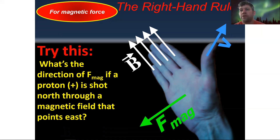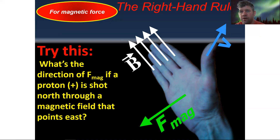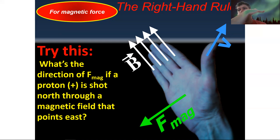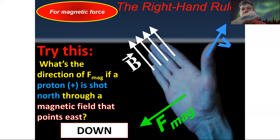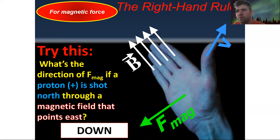Another one: what's the direction of the magnetic force if a proton is shot north through a magnetic field that points east? Thumb pointing north, fingers pointing east. That palm ends up facing downward. So the magnetic force is directed downward.